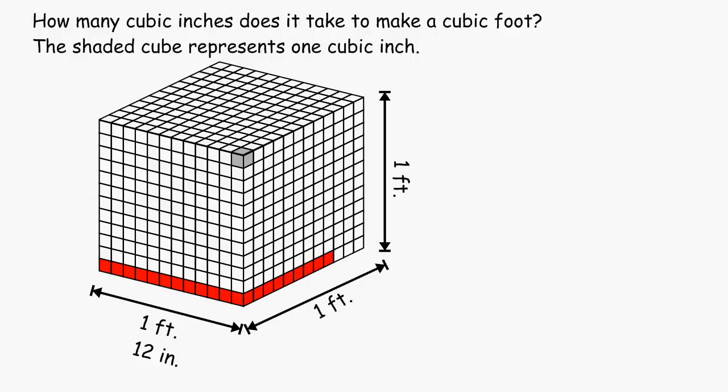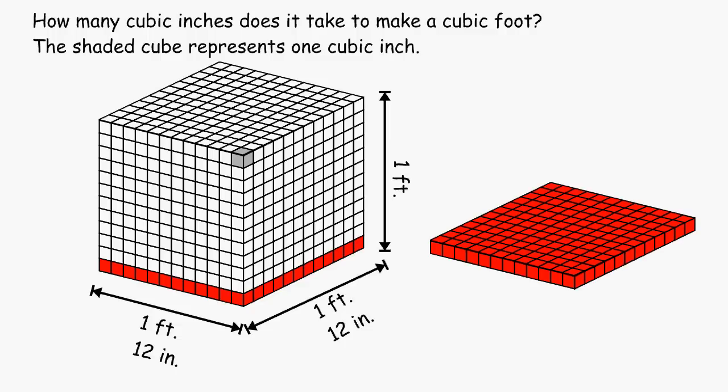So just by looking at the bottom layer, or the length times width, we could multiply 12 by 12 and figure out that in one layer there is exactly 144 cubic inches.